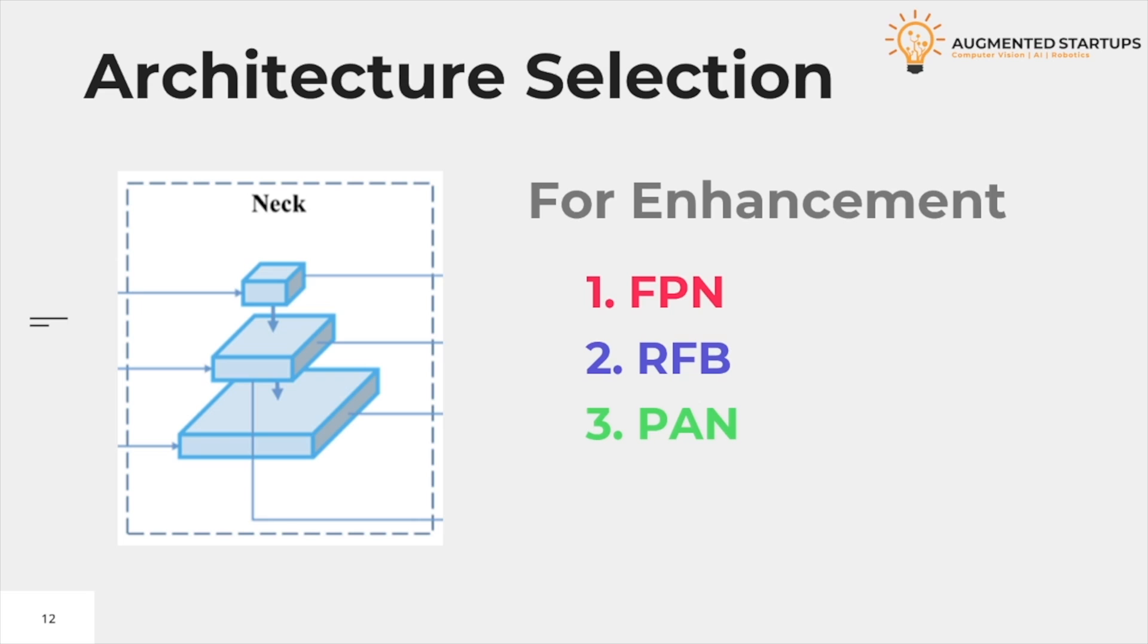Neck. Object detector models insert additional layers between backbone and head, which are referred to as the neck of the detector. The essential role of neck is to collect feature maps from different stages. Usually a neck is composed of several bottom-up paths and several top-down paths. For enhancement, we use FPN, RFB, and PAN.